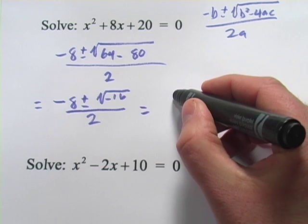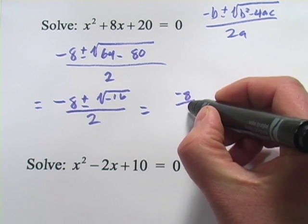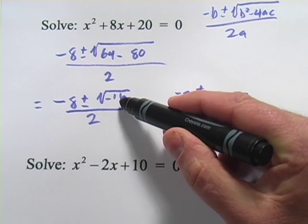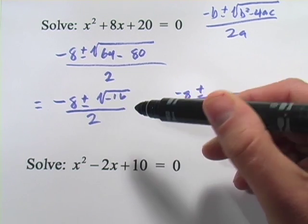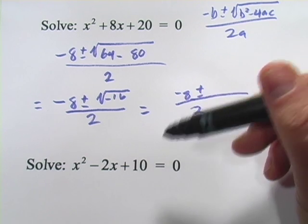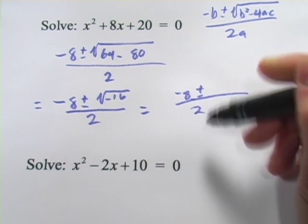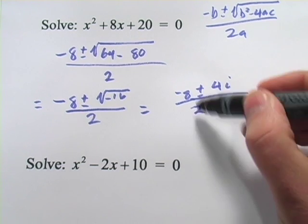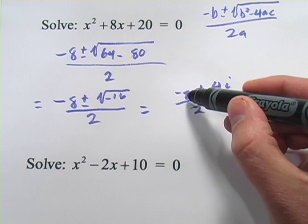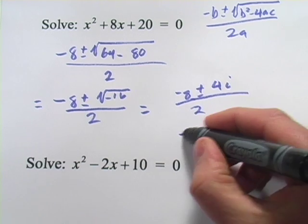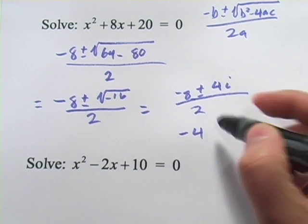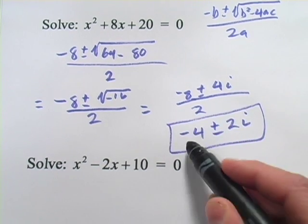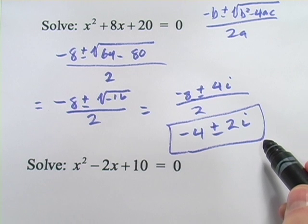So that equals negative 8 over 2 plus or minus. Now the square root of negative 16 is the square root of negative 1 times the square root of 16. The square root of negative 1 is i. The square root of 16 is 4. So that comes out to 4i. And now we can simplify the fraction here. 8 divided by 2, so that'll be negative 4. And 4 divided by 2, that'll be 2i. And our final answers are negative 4 plus or minus 2i.